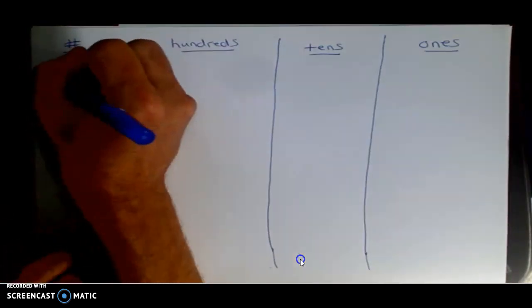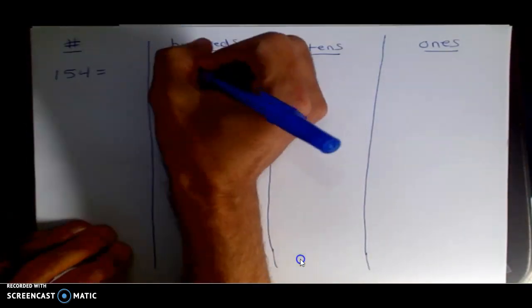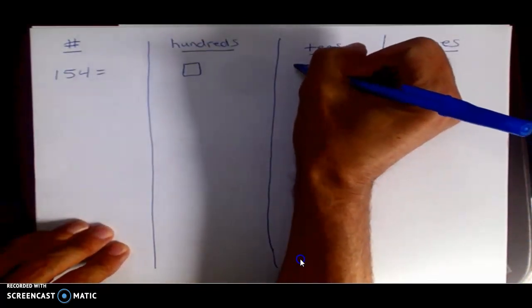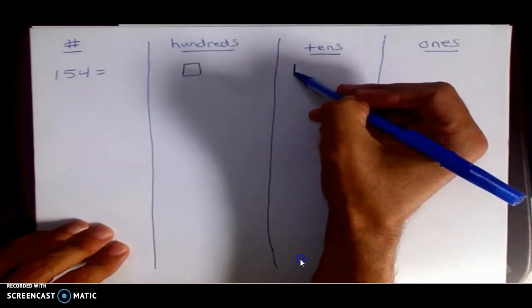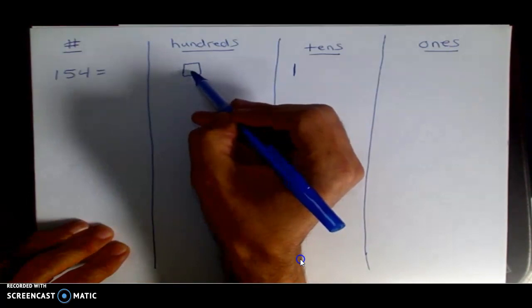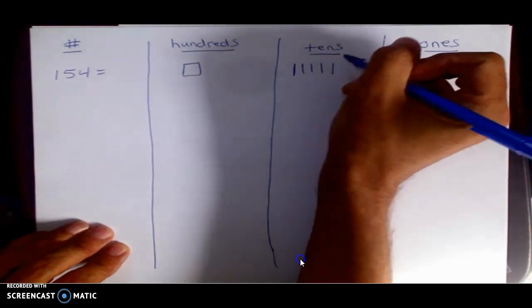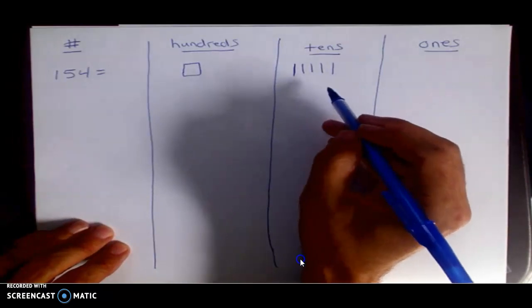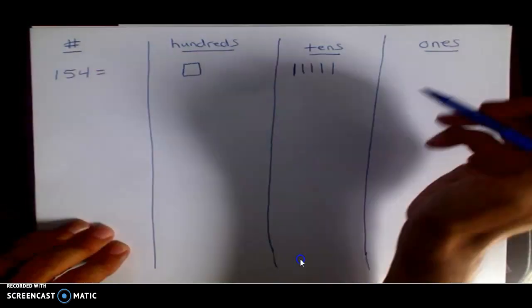We have our hundreds place, tens place, and ones place. For example, if I were to do the number 154, I would represent that. I can draw it. I can do 100, so I just draw a square. You can do five tens, so just a line like this represents a ten. We know that there's ten ones in that ten, and there's ten tens in this hundred. So we've got five tens: one, two, three, four, five.